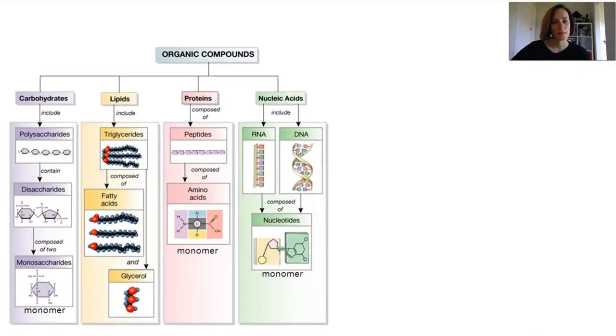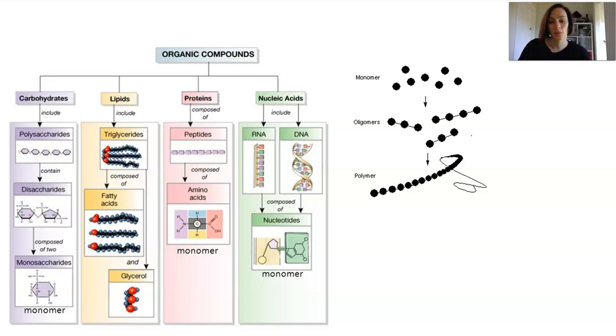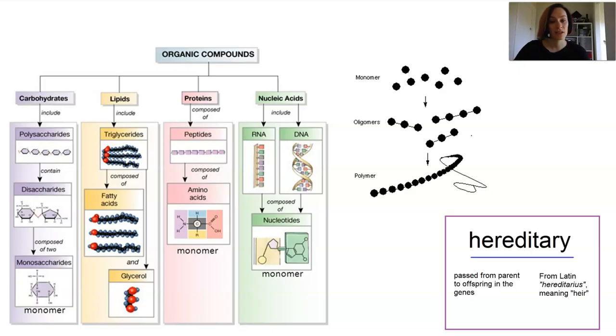Let's recall the four main types of macromolecules that exist within an organism. We've got carbohydrates, lipids, proteins and nucleic acids. They're all formed by smaller monomers which join together to form polymers or large molecules with repeating subunits. Now nucleic acids carry hereditary information from one generation to another, and we're going to discuss both DNA and RNA because they are both types of nucleic acids.